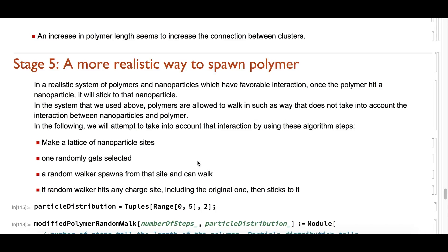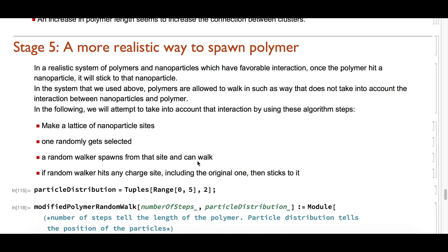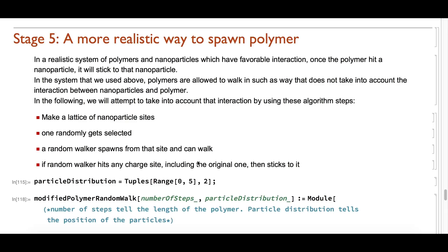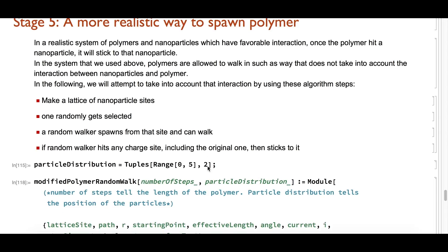The algorithm works as follows: First, we make a lattice of nanoparticle sites. One lattice site is randomly selected and a random walker will spawn from that site and can walk. If the polymer walker hits a lattice site including the original one, then the polymer will stick to that site.